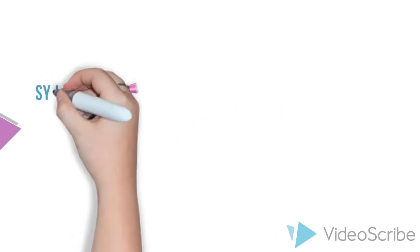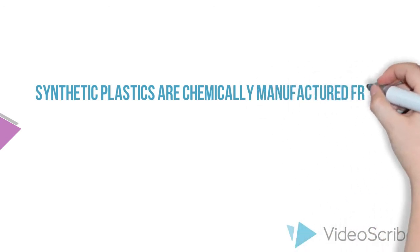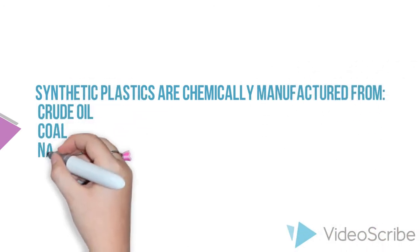Moving on to synthetic sources. Synthetic plastic is chemically manufactured from crude oil, coal, and natural gas.